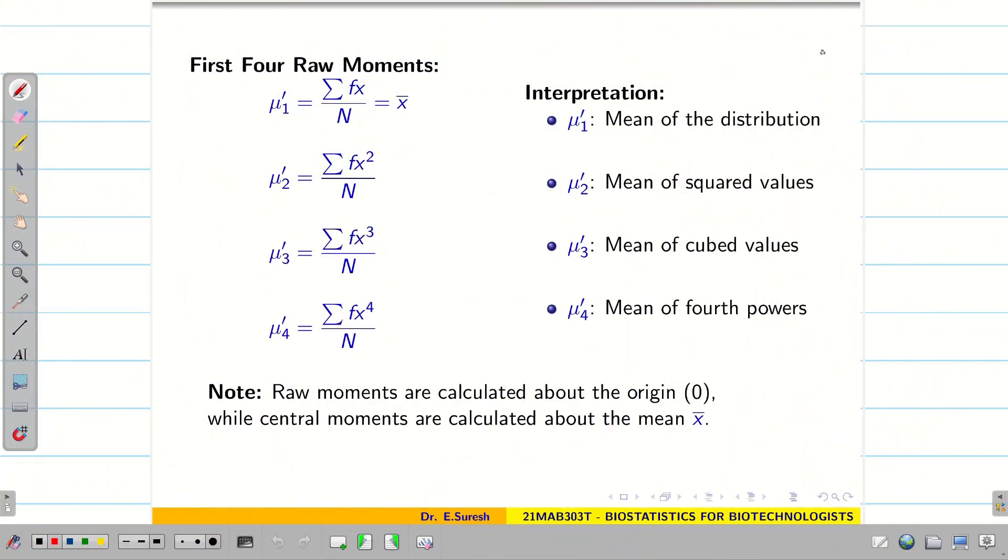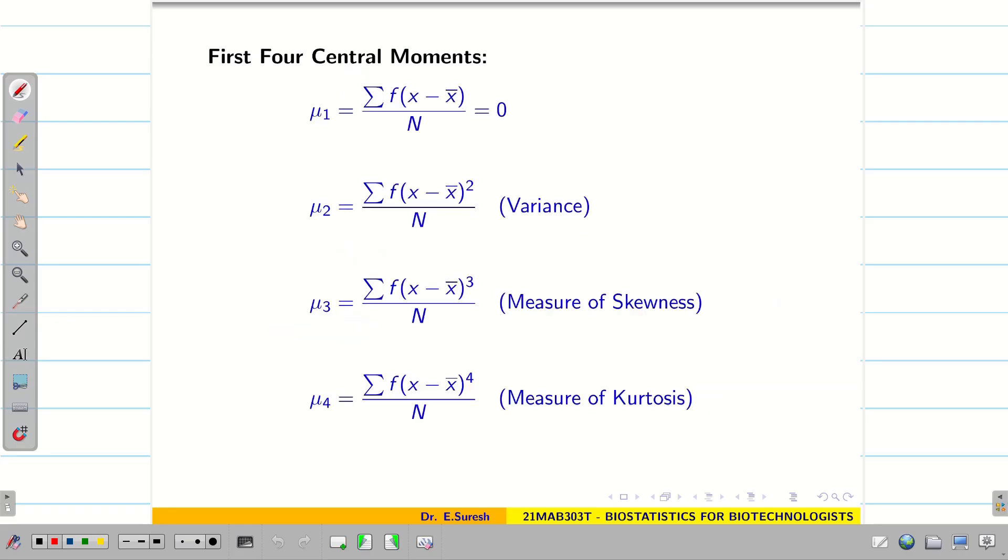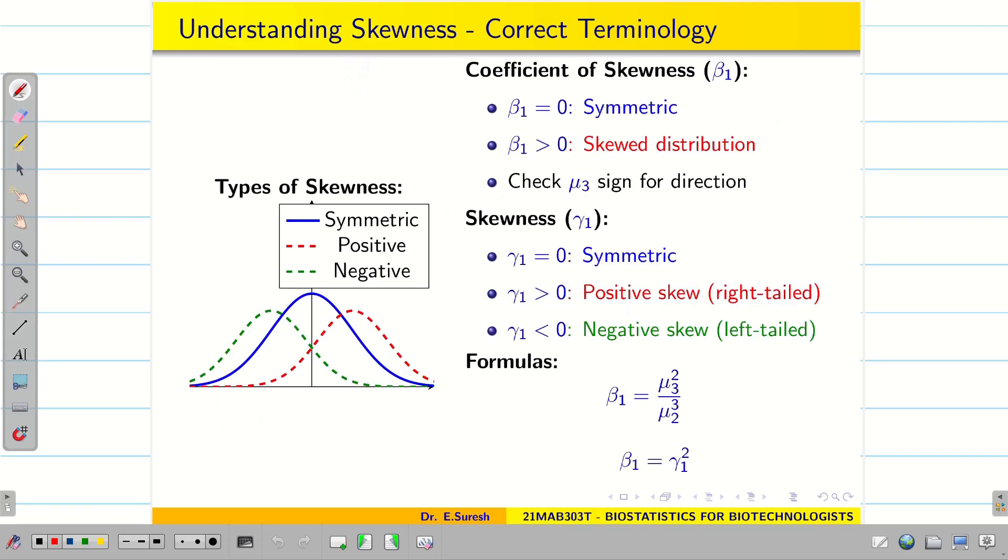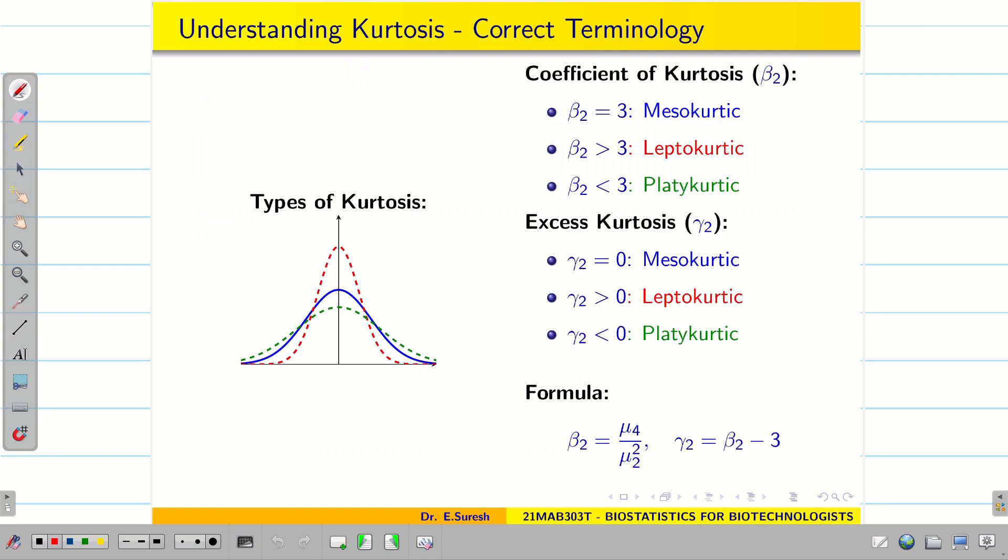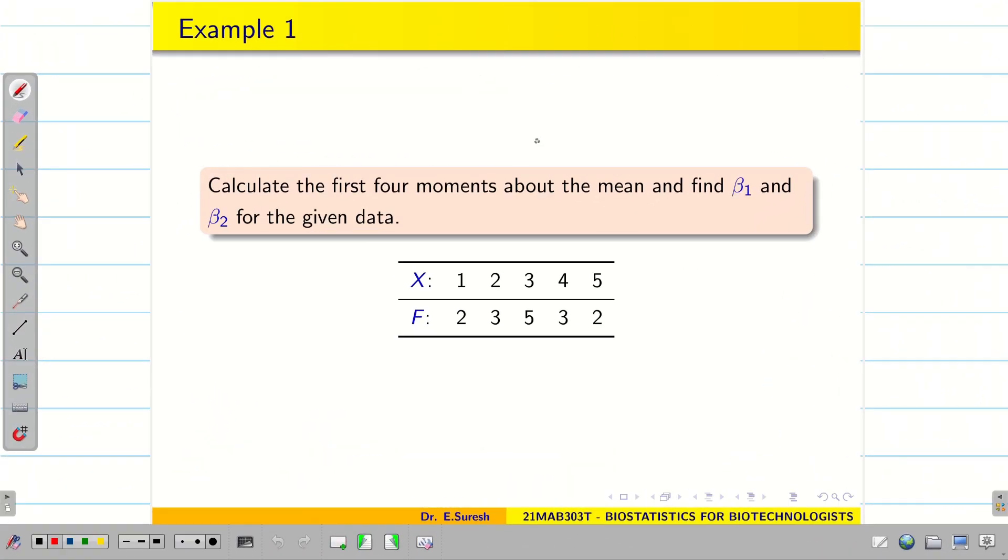In the previous video, we learned how to find the first four moments which is either raw moments or the central moments. Now we are going to solve a problem to find raw moments, central moments, skewness and Kurtosis. Let us go into the problem. Calculate the first four moments about the mean. Moments about the mean are central moments. And hence we have to find beta1 and beta2.